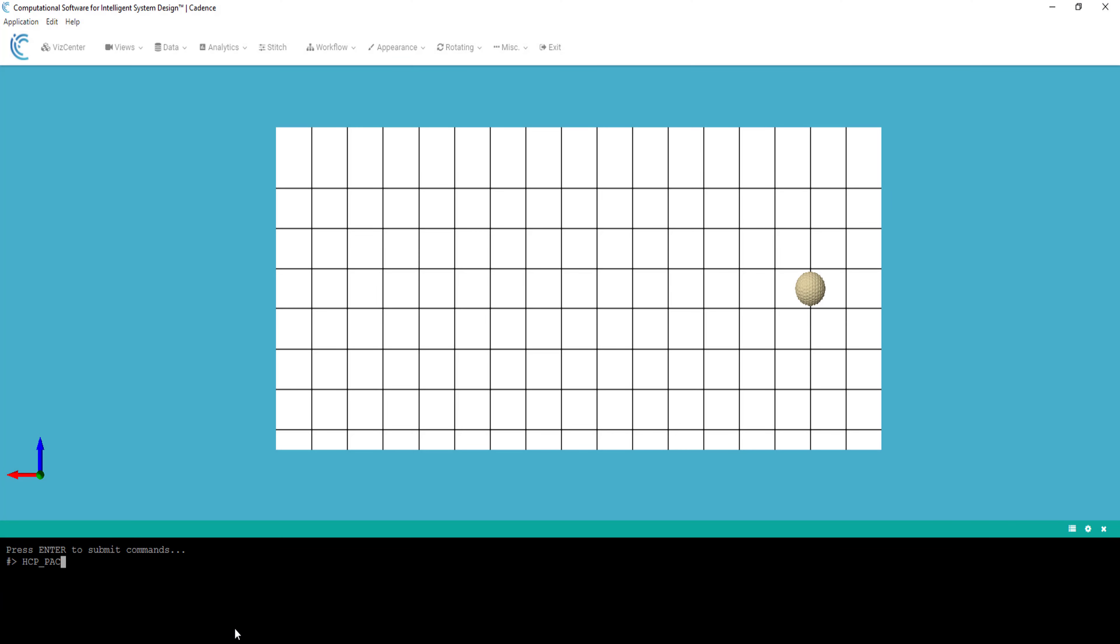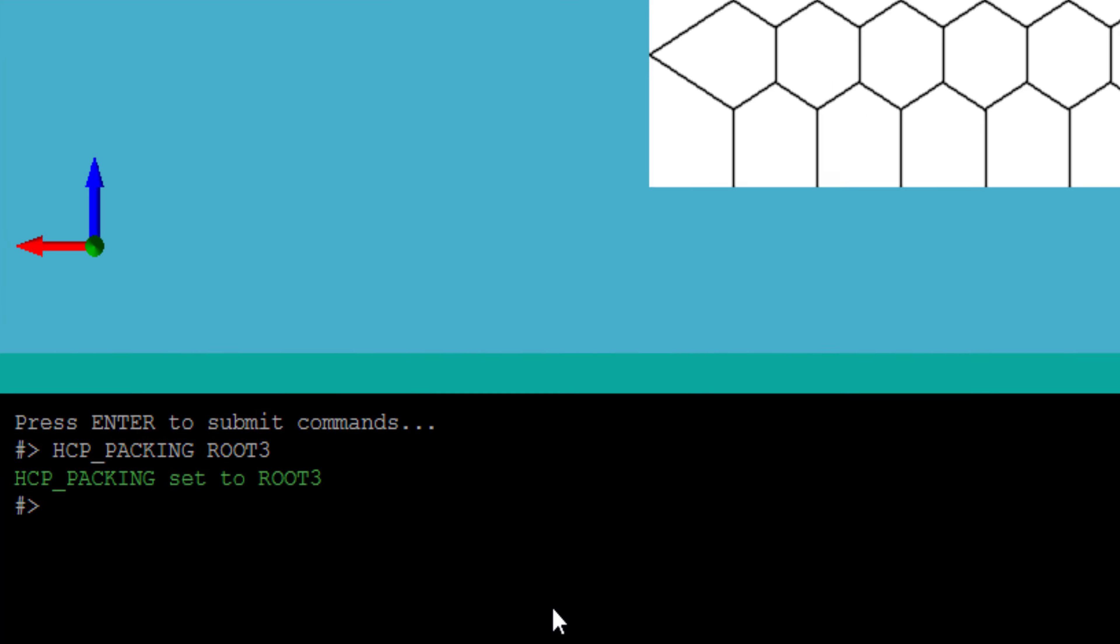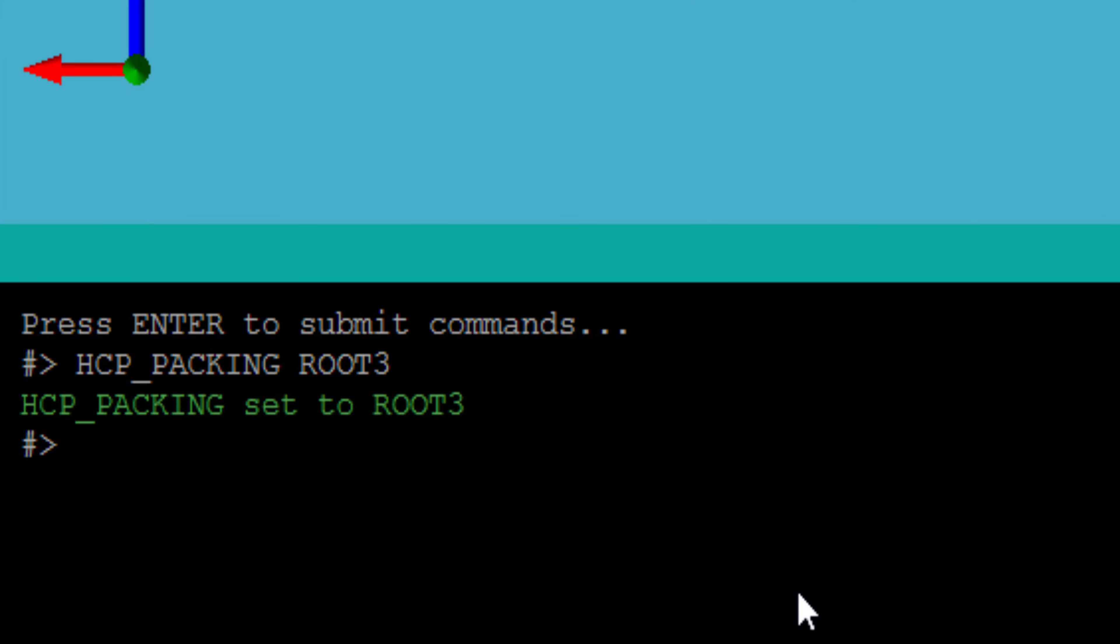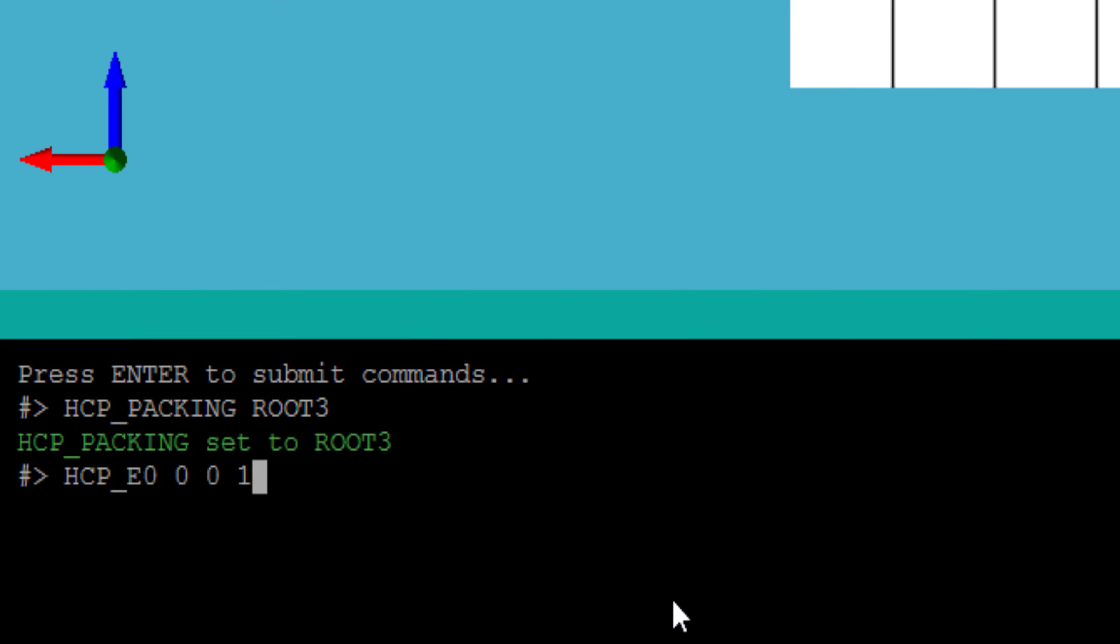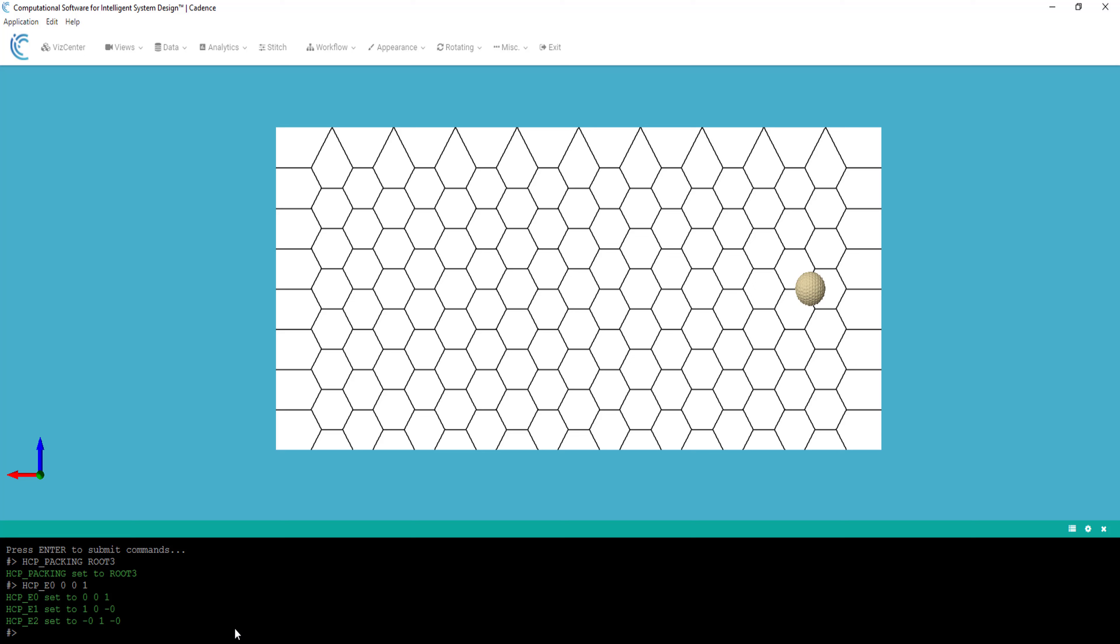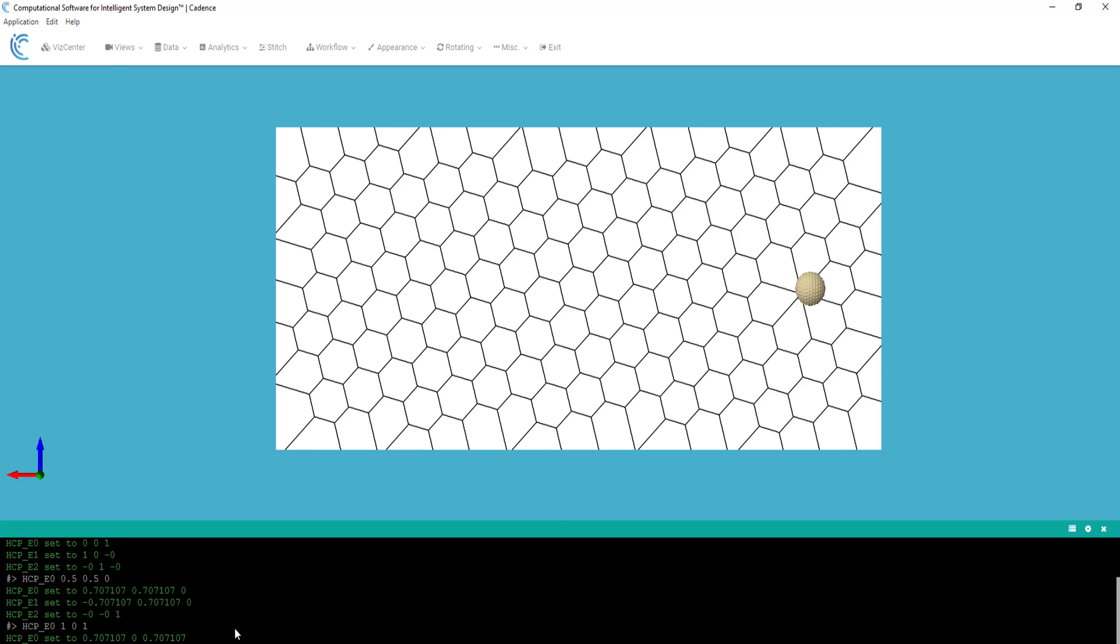You may want to realign the packing with the flow direction for proper mixing. In that case, you can use the command hcp-e0 followed by the flow direction axis. By default, the seeding direction is the x-axis. I can change it to the z-axis, as if the flow was coming from top to bottom. Or I could seed it at a 45-degree angle.